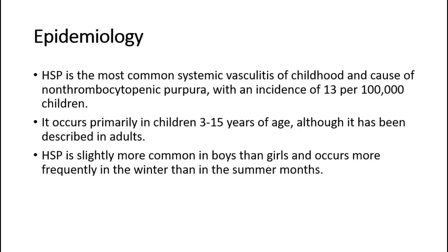HSP is the most common systemic vasculitis of childhood and cause of non-thrombocytopenic purpura, with an incidence of 13 per 100,000 children. It occurs primarily in children 3 to 15 years of age, although it has been described in adults. HSP is slightly more common in boys than girls, and occurs more frequently in the winter than in the summer months.